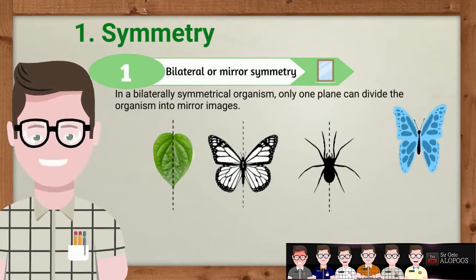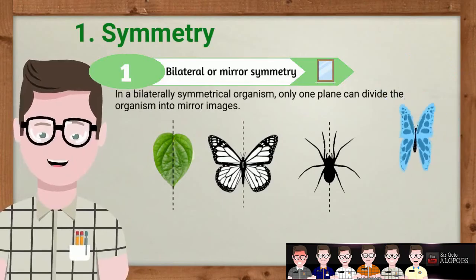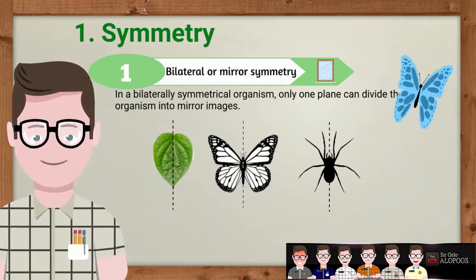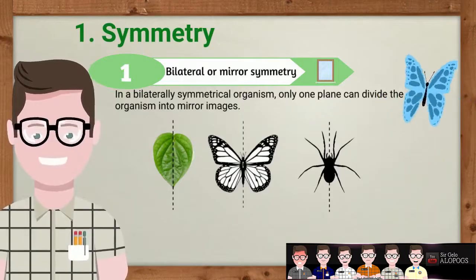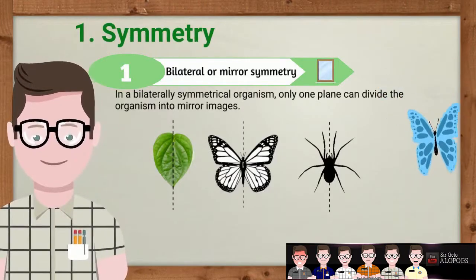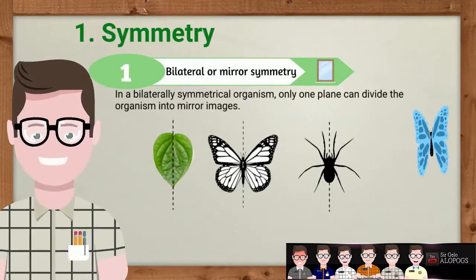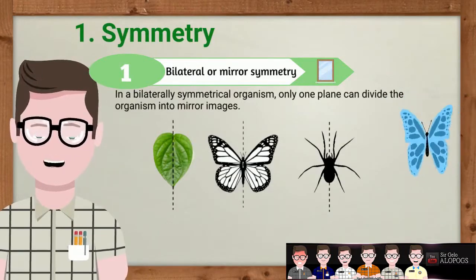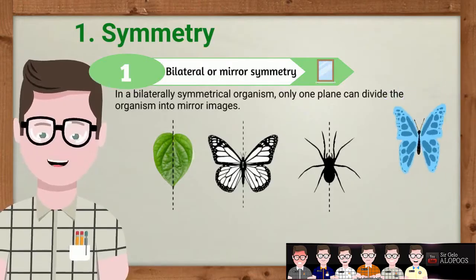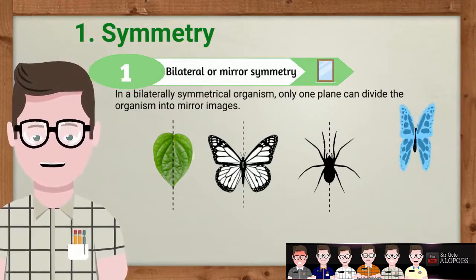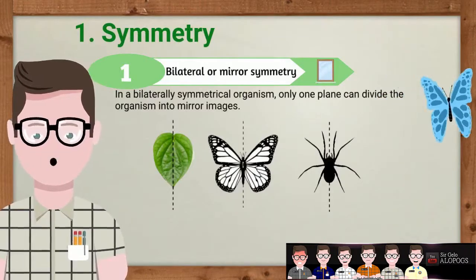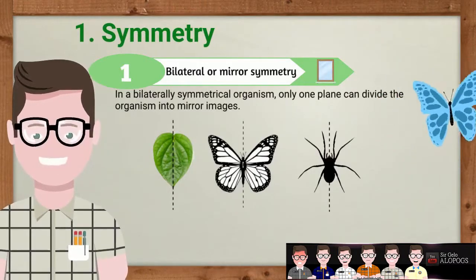Bilateral symmetry can also be called left-right symmetry or reflection symmetry. An example is the reflection of trees in a river. If you draw a line down the middle of your face and the left side is the same as the right side, that is bilateral symmetry. If one eye is smaller and the other is larger, that is called asymmetry.